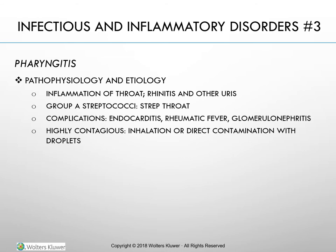Pharyngitis: Inflammation of the throat is often associated with rhinitis and other upper respiratory infections. Viruses and bacteria cause pharyngitis. The most serious bacteria are the group A streptococci, causing a condition commonly referred to as strep throat. Strep throat can lead to dangerous cardiac complications called endocarditis and rheumatic fever, and harmful renal complications called glomerulonephritis. Pharyngitis is highly contagious and spreads via inhalation or direct contamination with droplets. The incubation period is 2 to 4 days. The first symptom is a sore throat, sometimes severe, with accompanying dysphagia (difficulty swallowing), fever, chills, headache, and malaise. Some clients exhibit a white or exudate patch over the tonsillar area and swollen glands. A throat culture reveals the specific bacterial cause.